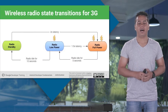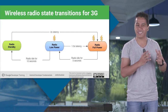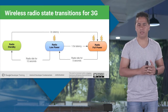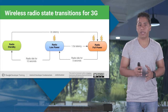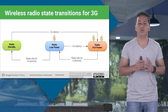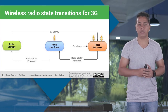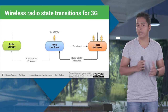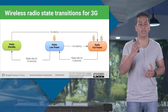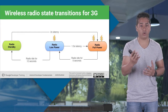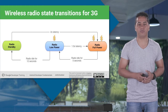Let's see the state transitions between these wireless radio states. Whenever your wireless radio is at standby mode, it takes 2 seconds latency to get to the full power state. From full power state, if your radio is idle for 5 seconds, it will go to low power state to save battery and other resources. From low power state, if your radio has to come back to full power state, it will take 1.5 seconds latency. And if your radio is idle for 12 seconds, it will go back to standby state.